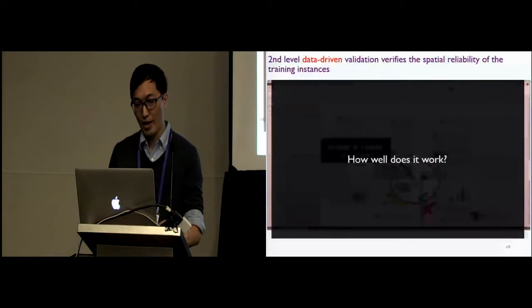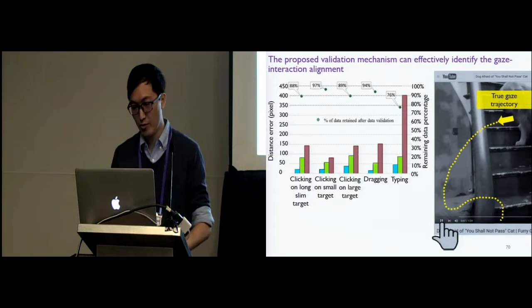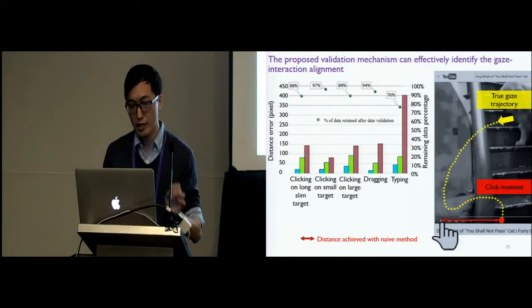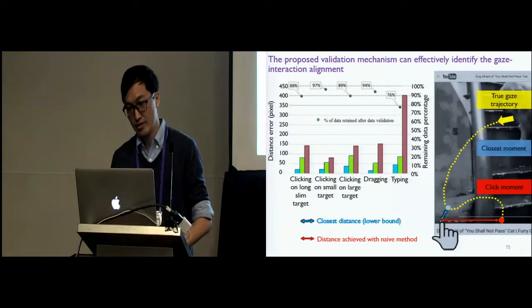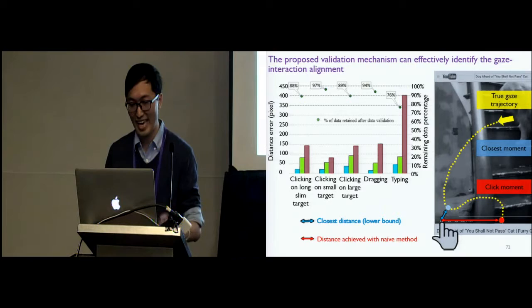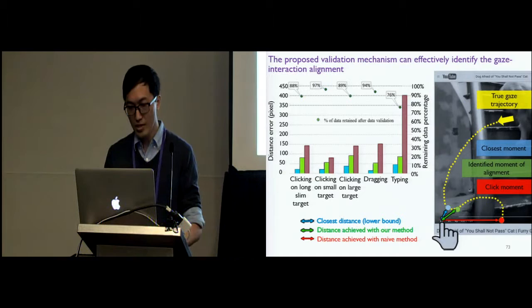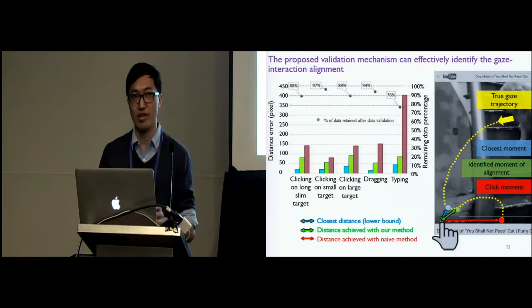So, how well does it work? We ran an experiment using the Tobii eye tracker as gold standard. The yellow dashed line here shows the true gaze trajectory. The red dot corresponds to the location of gaze at the click moment. So this is the performance we get with the naive method. The blue dot corresponds to the shortest distance between the gaze and the click. So this is the absolute lower bound, the best performance that we could possibly get. The green dot corresponds to the moment of the highest gaze interaction alignment, as identified by our validation mechanism. We can see that our method does significantly better than simply using the naive people are looking at where they click or type assumption.